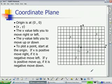To plot a point, start at the origin. If x is positive, move right. If it is negative, move left. If y is positive, move up. If it is negative, move down.